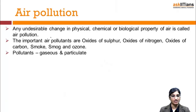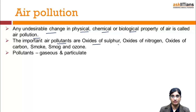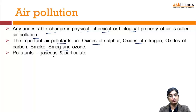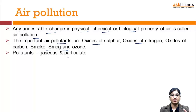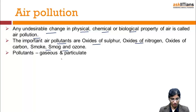What is air pollution? Any undesirable change in the physical, chemical, or biological property of air is known as air pollution. The important air pollutants are oxides of sulfur, oxides of nitrogen, oxides of carbon, smoke, and ozone. Pollutants are categorized into two types: gaseous and particulate. If the pollutant is in gaseous form, it is gaseous; if in particulate form — like smoke, insecticides, fungicides, or water droplets — it is particulate.